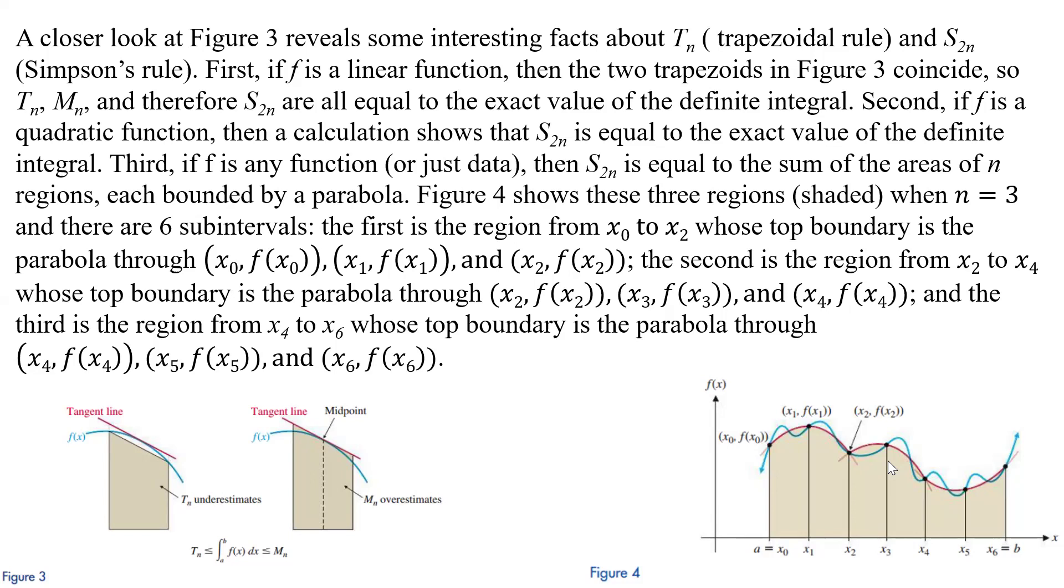And there are going to be six subintervals. The first is a region from basically X sub 0 to X sub 2, and that gives us kind of the parabolic shape here.